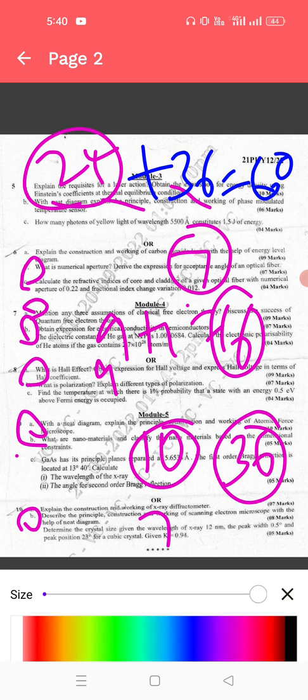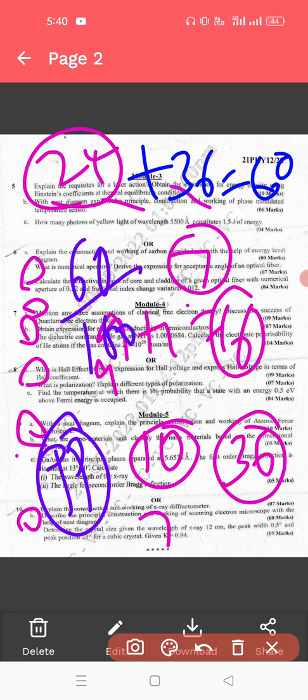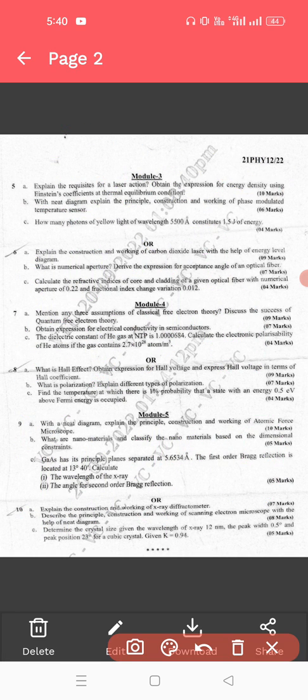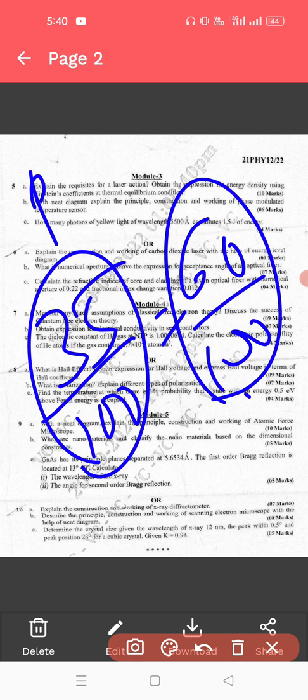So from the previous day in the passing package which I have given, 60 marks came out of 100. I told definitely 35 marks will be coming, but here 60 marks came from yesterday's passing package for the physics paper of VTU.